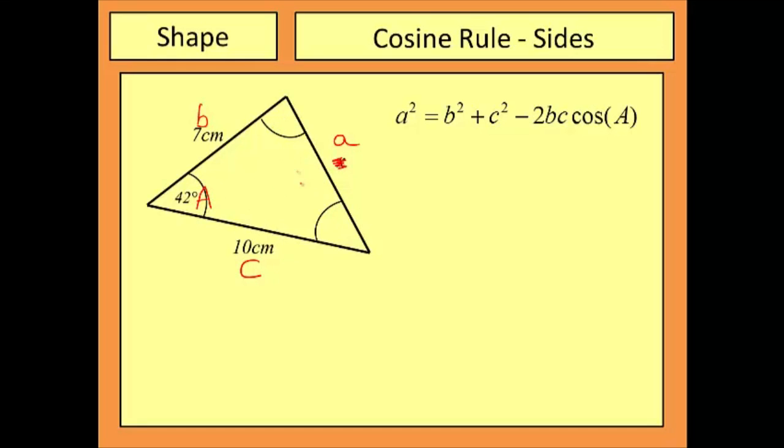I'm not particularly interested in these two angles so I'm going to start by putting some numbers into this formula. A squared which I don't yet know is equal to B squared. So in this case that's 7. Plus C squared which in this case is 10. Take away 2 times B which is 7 times C which is 10. And that's multiplied by the cosine of the angle A which is 42.